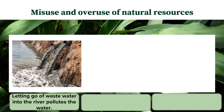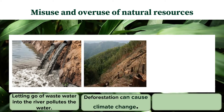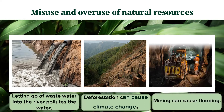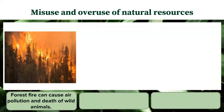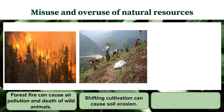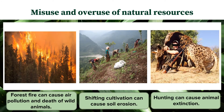For example, letting waste water into the river pollutes the water. Deforestation can cause climate change because trees are being cut down. Mining can cause flooding. Forest fire can cause air pollution and death of wild animals. Shifting cultivation can cause soil erosion. And hunting can cause animal extinction, including the extinction of endangered species. These are things and actions that we need to avoid.